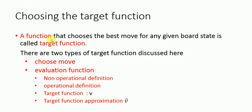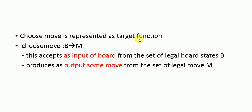Choosing the best target function: a target function is a function that chooses the best move for any given board state. There are two types discussed here. The first is ChooseMove and the evaluation function. ChooseMove is represented as choose_move: B to M, where B stands for board and M stands for a legal move. It accepts a board from the set of legal board states B and produces a move from the set of legal moves M.